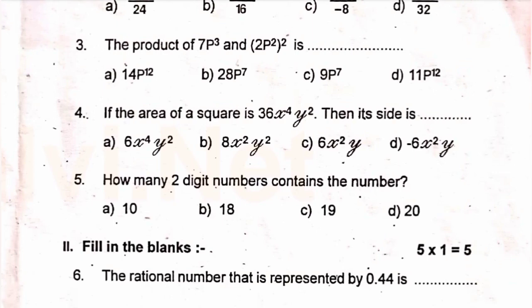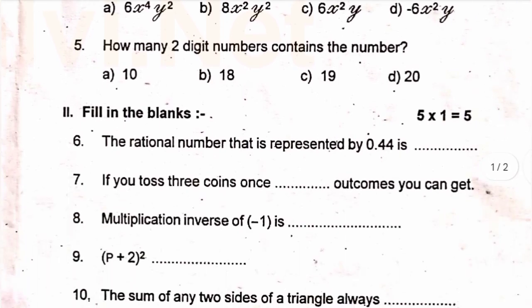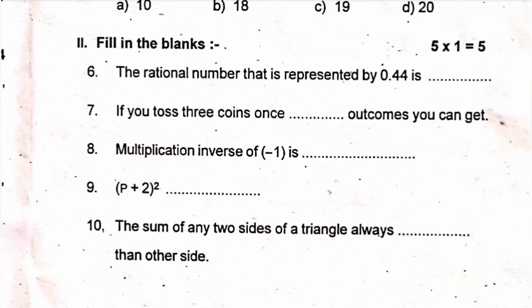Roman number two, fill in the blanks. Sixth one, the rational number that is represented by 0.44 is dash. Number seven, if you toss three coins once, dash outcomes you can get. Number eight, multiplication inverse of minus one is dash. Number nine, p plus two the whole square dash. Number ten, the sum of any two sides of a triangle always dash than other side.